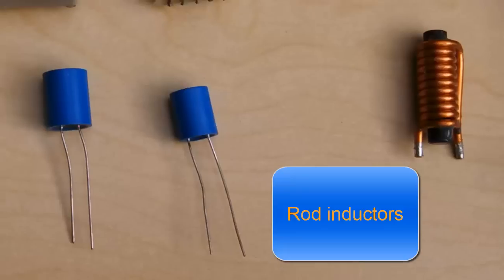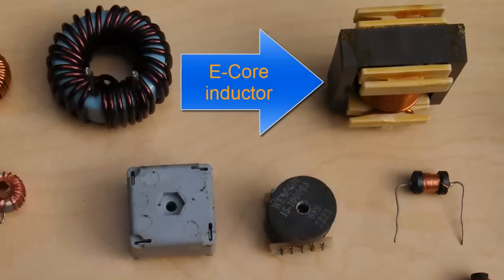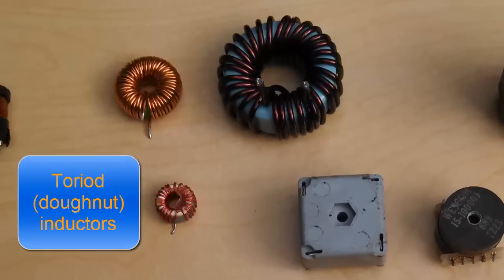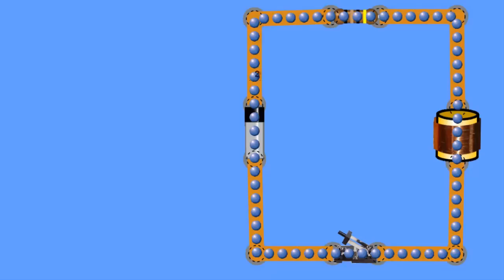But a perfect inductor has no resistance. So for all practical purposes this circuit should be identical to the one on the left because we have a 1 ohm resistor, a 2 volt battery, and an inductor with no resistance. So you'd expect the current to do exactly what it did in the circuit on the left. Let's close the switch and see what happens.